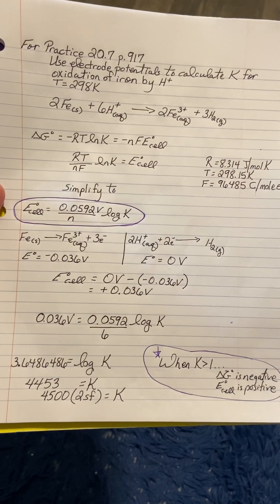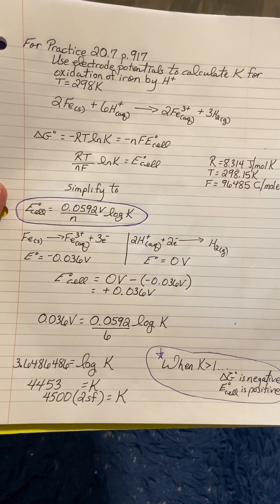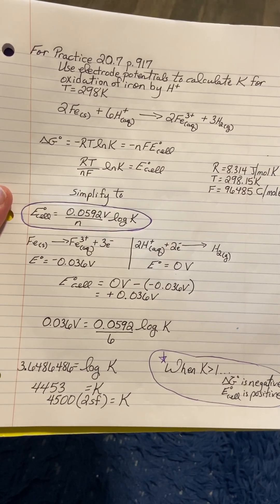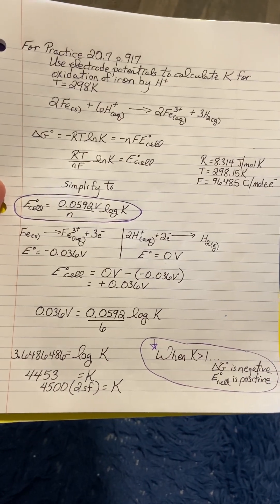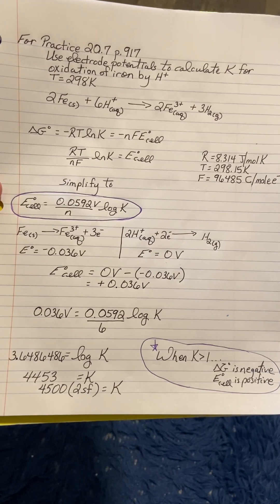Our E_cell is zero volts minus negative 0.036 volts, so we get a positive E_cell. Remember that will tell us it's a spontaneous process.